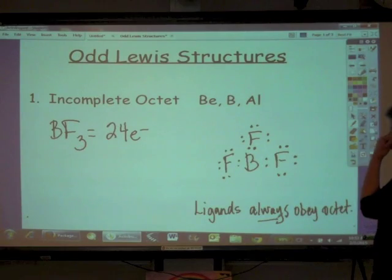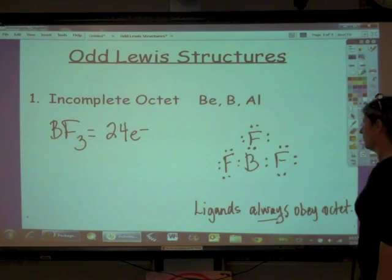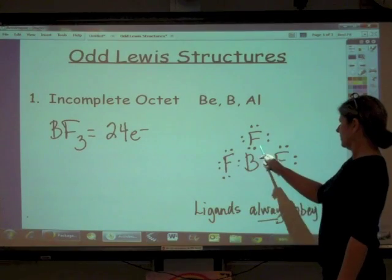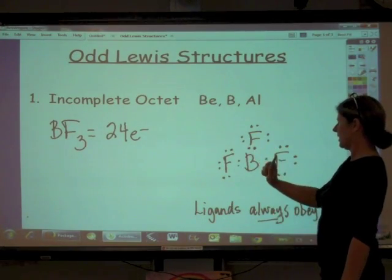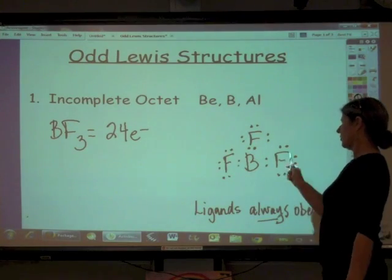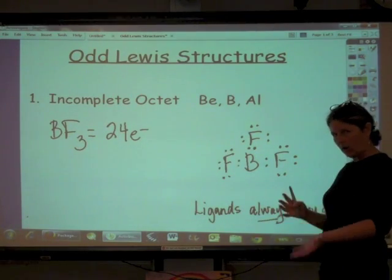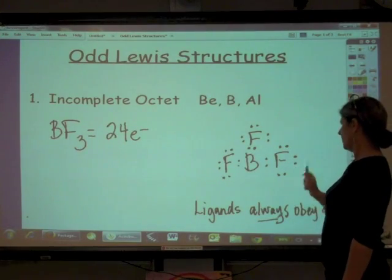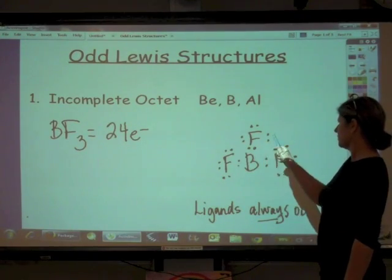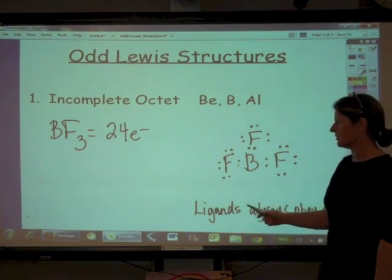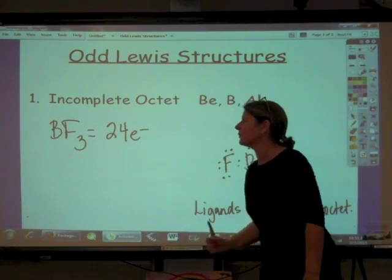Okay, so if we count up then, we're going to go two, four, six, eight for each fluorine. So our ligands are all following octet and we have two, four, six, eight, ten, twelve, fourteen, sixteen, eighteen, twenty, twenty-two, twenty-four electrons. So all of our electrons are accounted for.